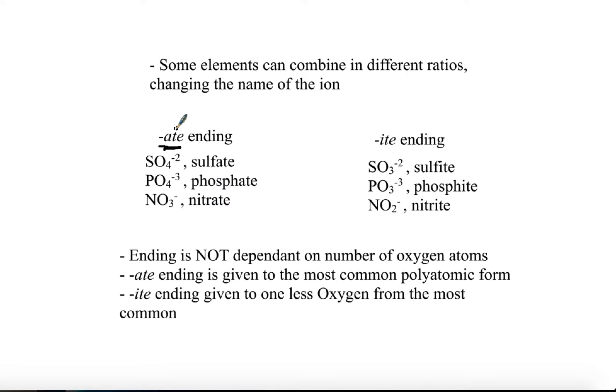The ending does not tell you how many oxygens there are. What it does tell you is that this compound is the most common of that ratio. These ratios can vary, and when you have one less oxygen in that ratio, it takes on an -ite ending. This is not to be confused with the -ide we have been talking about. It's -ite, I-T-E.